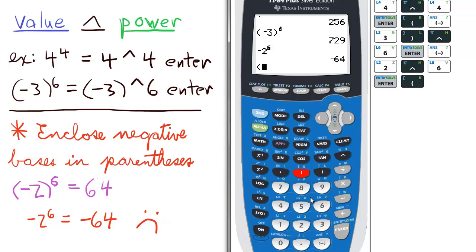Most of the time, teachers want you to enclose the negative base in parentheses. So negative 2 raised to the 6th. The prior number was the opposite of 2 raised to the 6th.